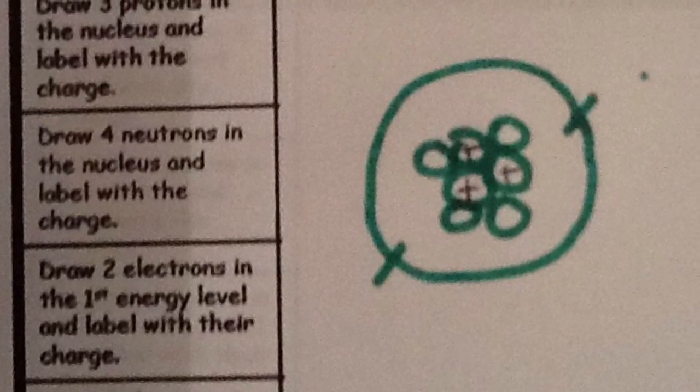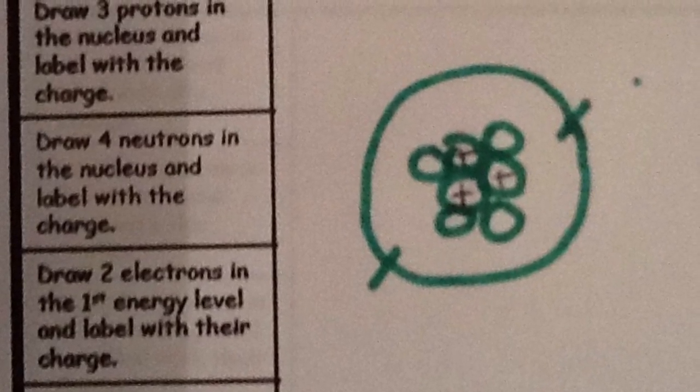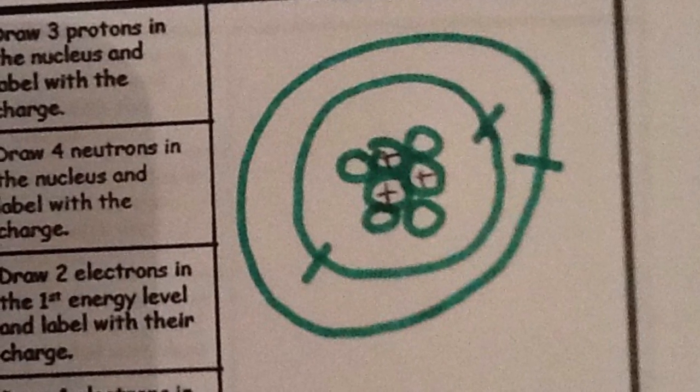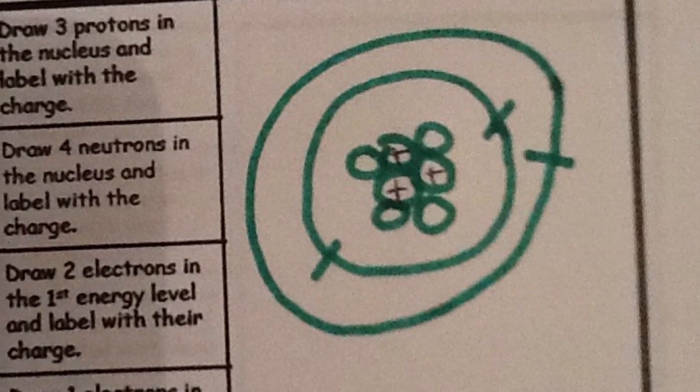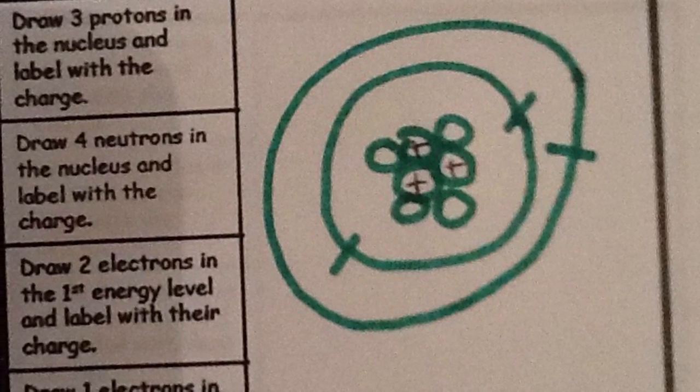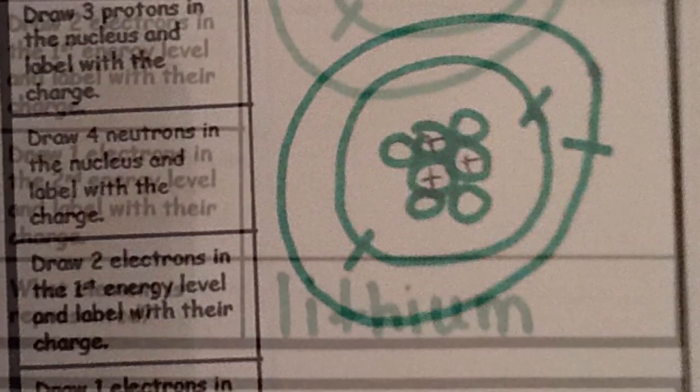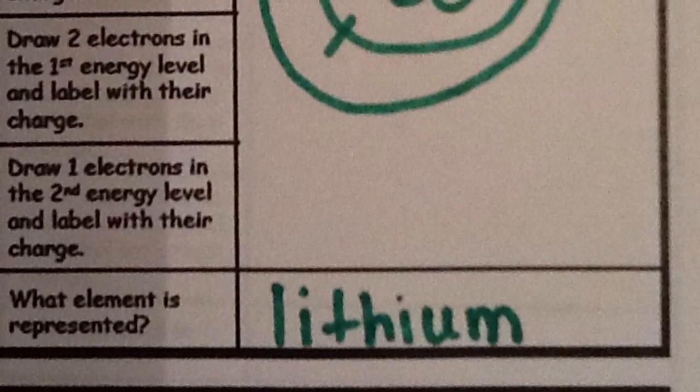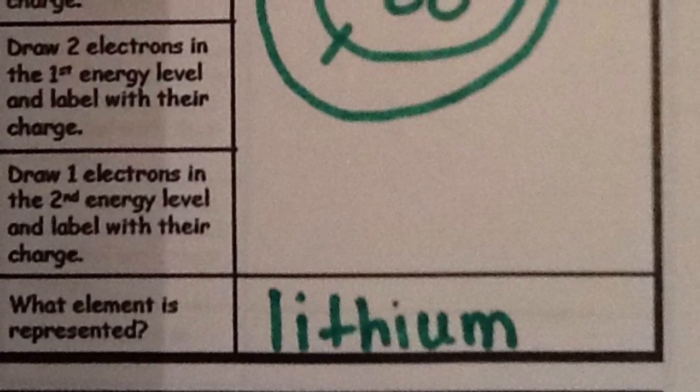The first energy level holds two electrons which are negative. The second energy level could hold up to eight electrons, but for this particular element I only need one more for a total of three electrons in this element. This Bohr model represents the element lithium because it has three protons in its nucleus.